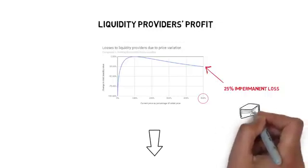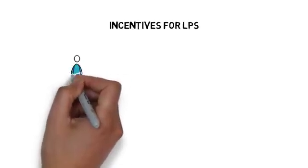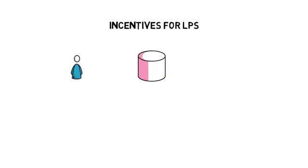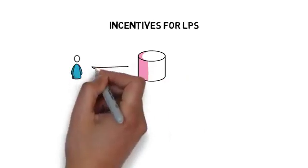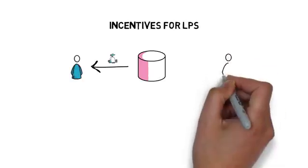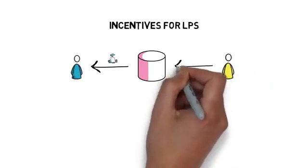So if impermanent loss can take away so much profit, what is the incentive for liquidity providers to provide liquidity in the first place? Let's see how LPs can make money on their capital. In the perfect world with no impermanent loss, LPs would just be collecting money from the trading fees. When it comes to Uniswap, each trade that goes through a liquidity pool pays a 0.3% fee that is proportionally distributed to the LPs of that pool.